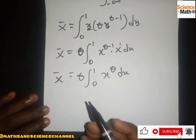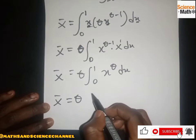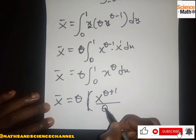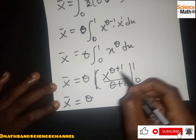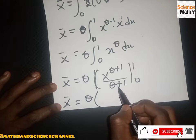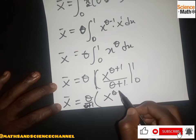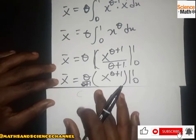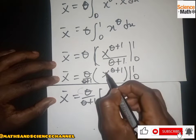Integrating x^θ, we add 1 to the exponent and divide by the new exponent, giving x^(θ+1)/(θ+1), evaluated from 0 to 1. We factor (θ+1) outside. Substituting the limits: we have θ divided by (θ+1), multiplied by the result of the evaluation from 0 to 1.